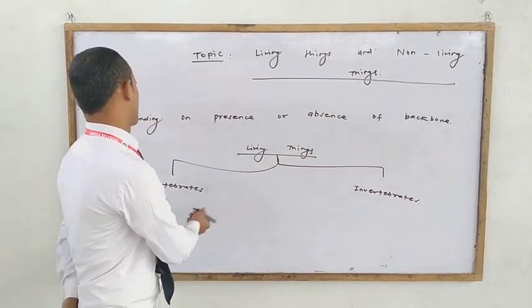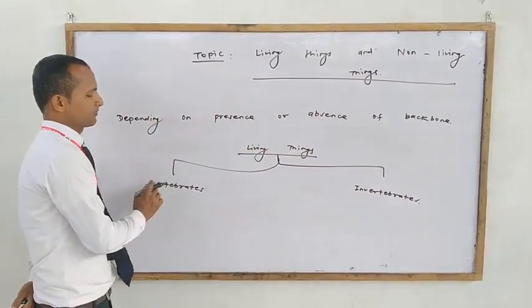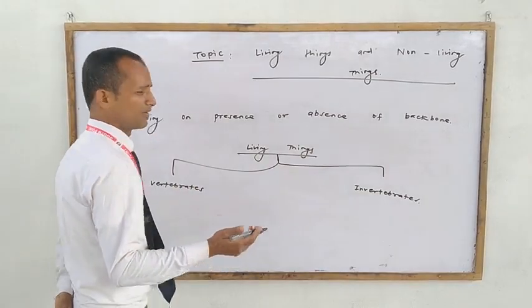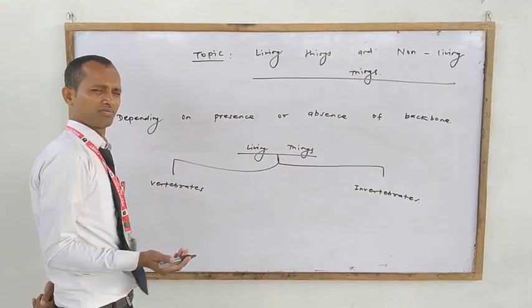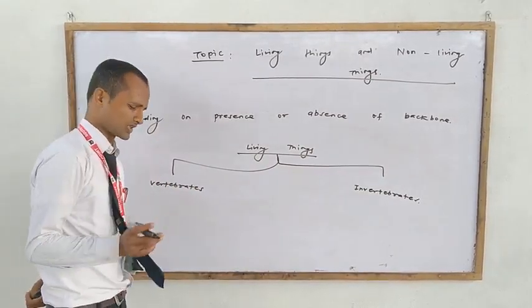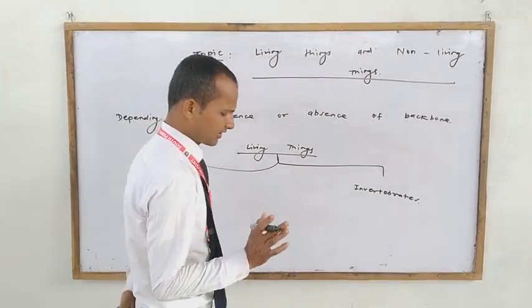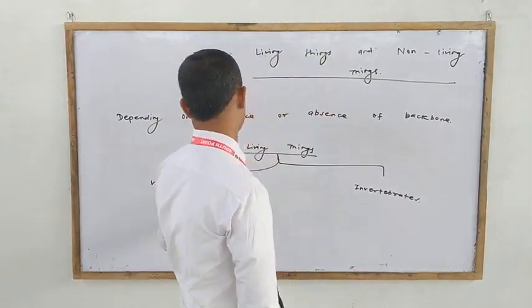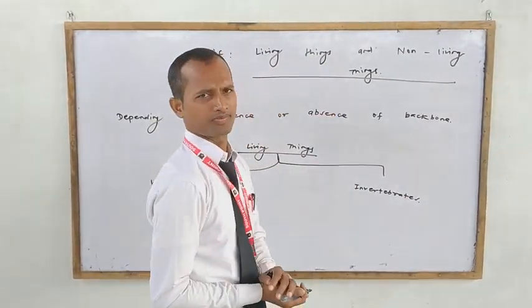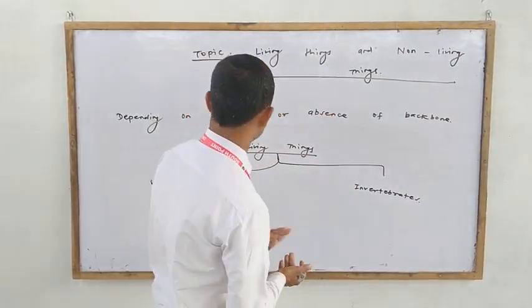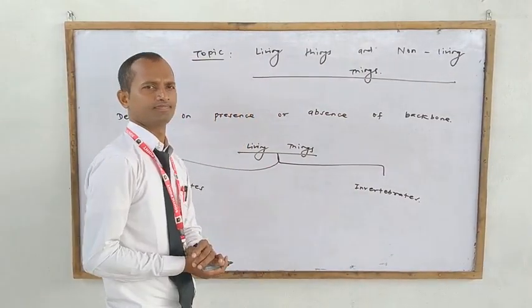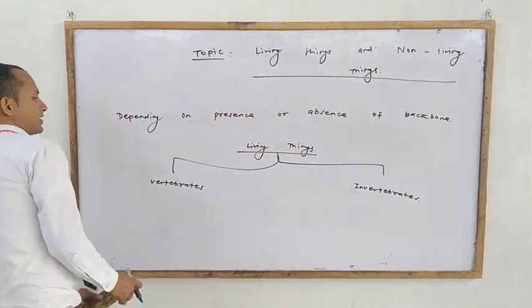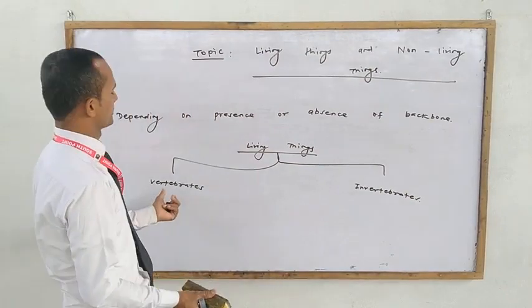Living things are divided into two groups — vertebrates and invertebrates. Vertebrates are further divided into five major groups, which are also called phyla. Let's now discuss about these five groups of vertebrates.